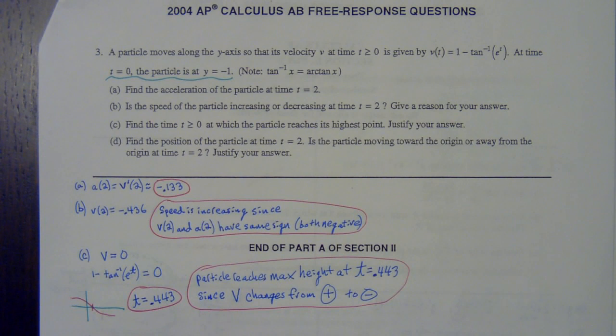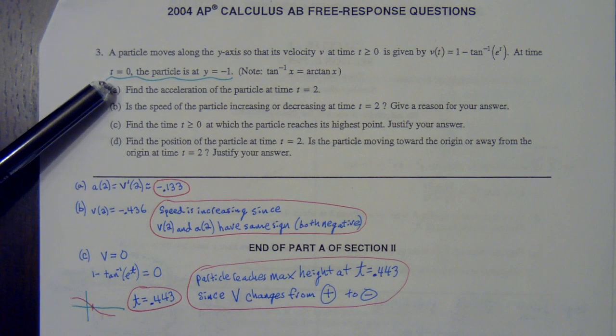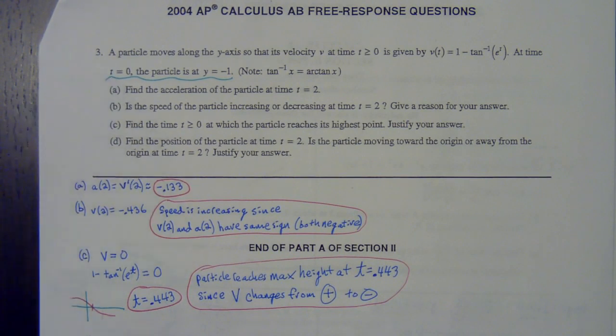We have a particle moving along the y-axis. They give us the velocity function. They also tell us that at time t equals zero, the particle is at y equals negative one. I'll probably use that when they're asking me for the position at some point.